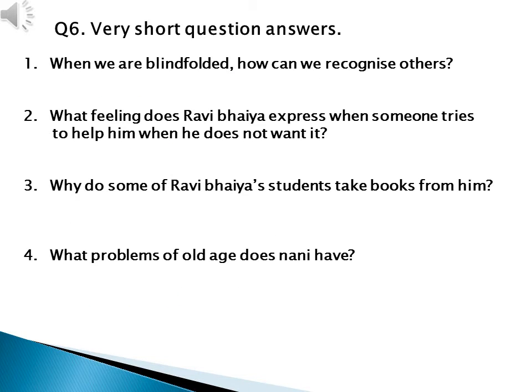Question number six, very short question answers. Number one: when we are blindfolded, how can we recognize others? Answer is by touching and feeling others. Number two: what feeling does Ravi bhaiya express when someone tries to help him when he does not want it? Answer: Ravi bhaiya becomes very angry.